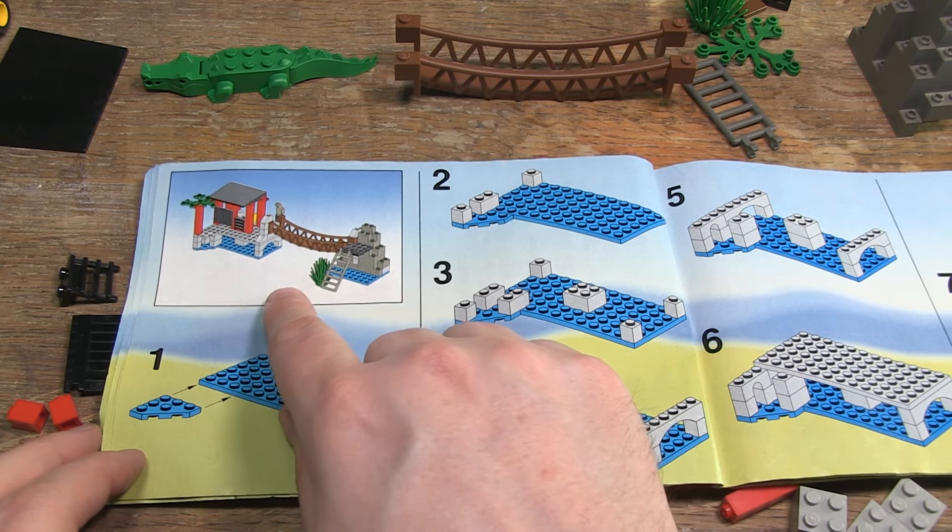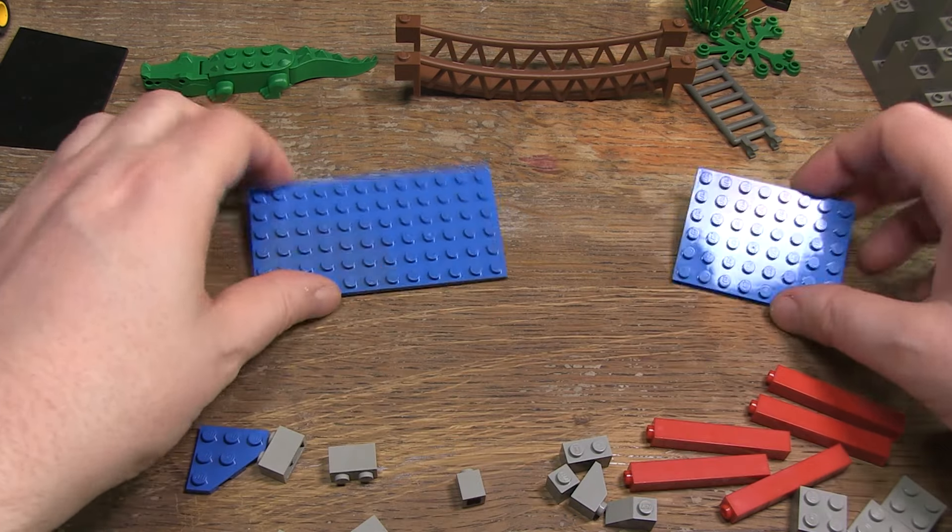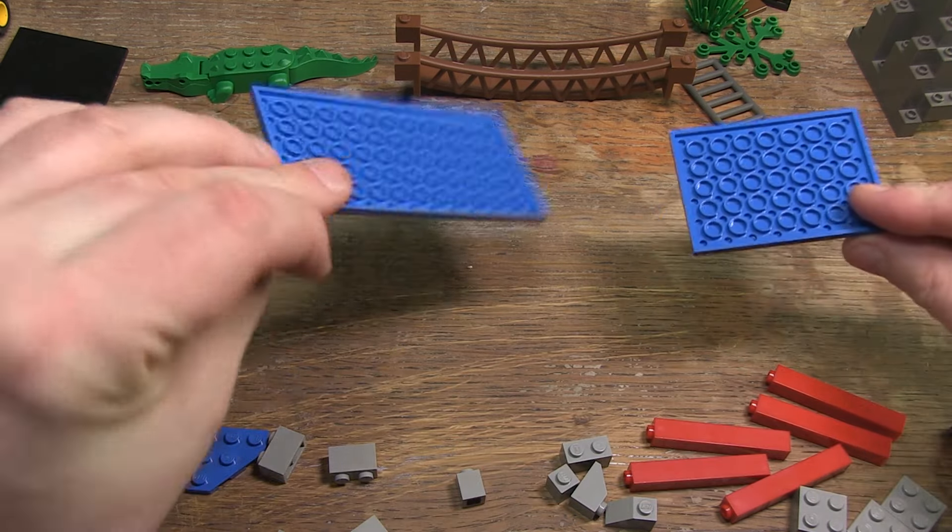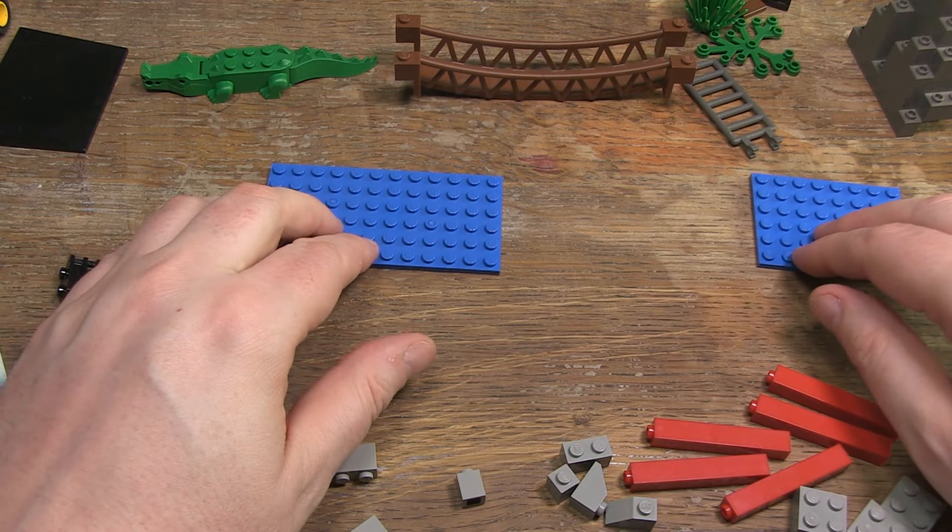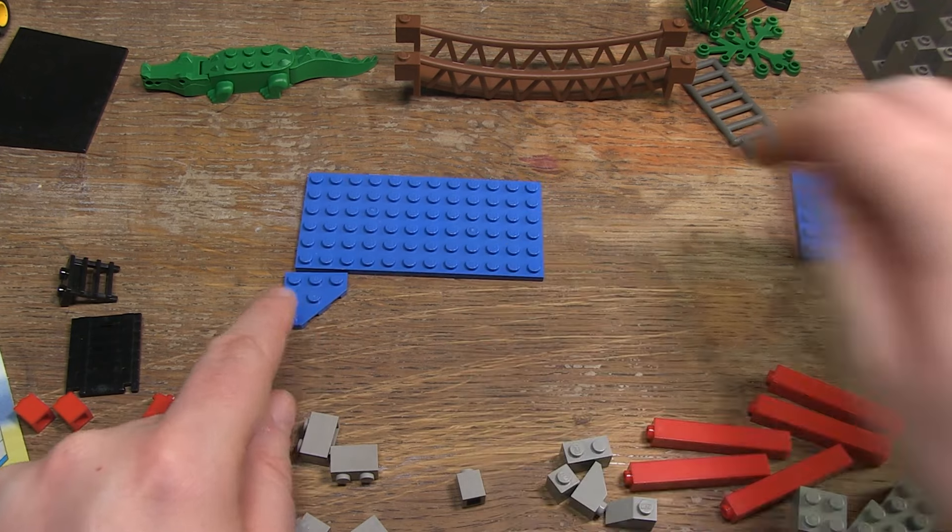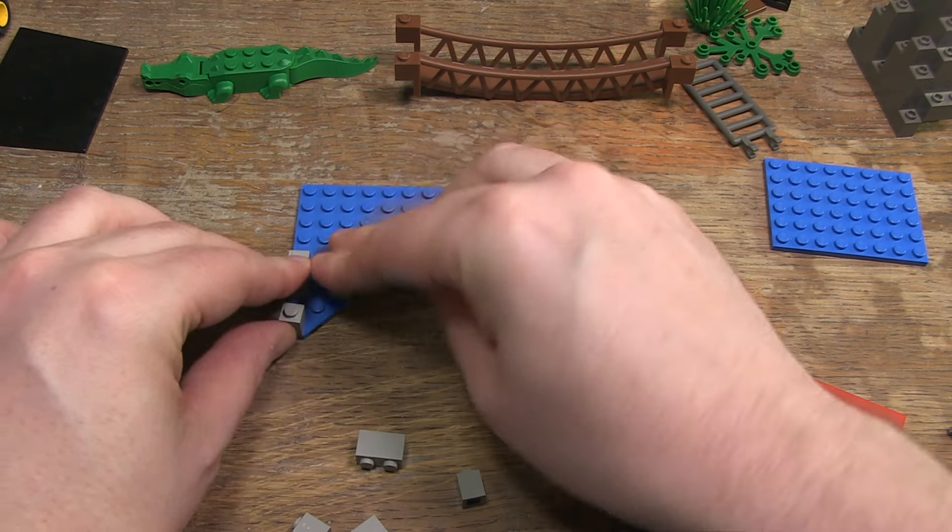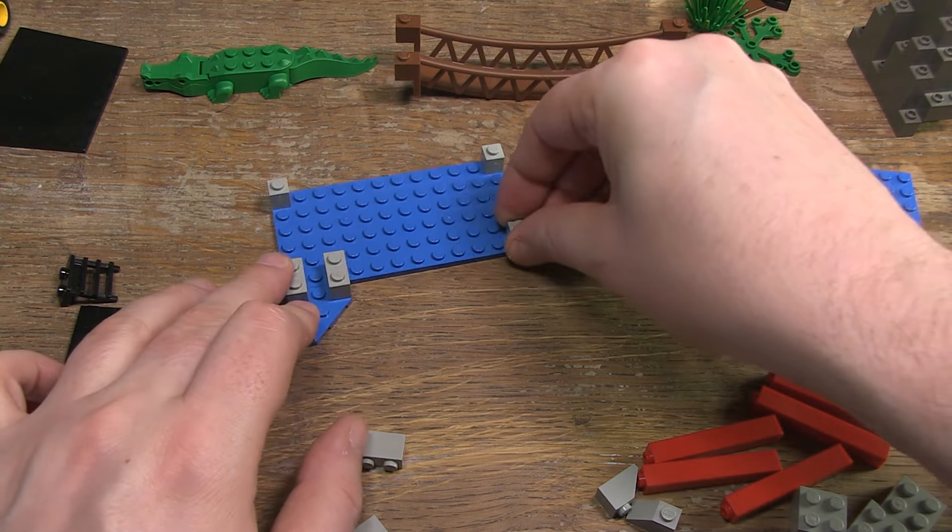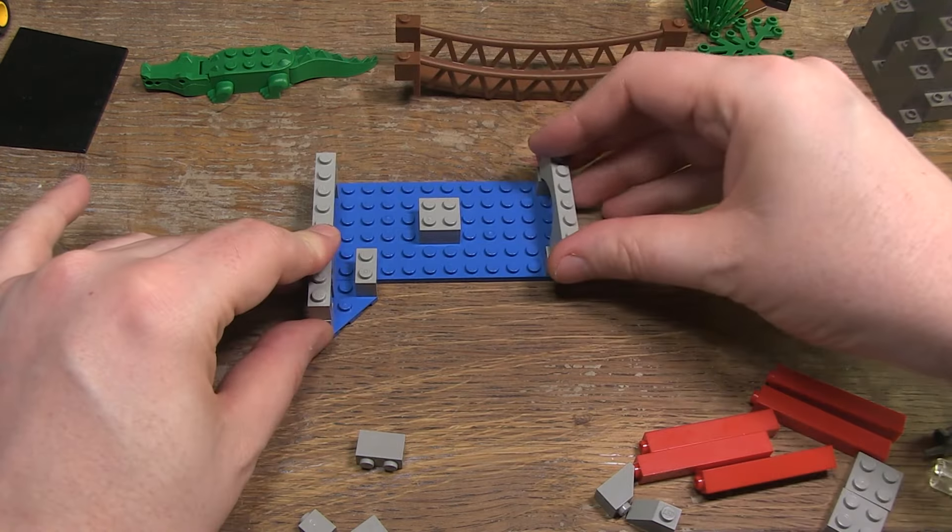And now the hut with suspension bridge and rock formation. Here it's a pity that two small blue panels were chosen as a base. A compact blue base plate that connects both parts would have been an absolute added value here. First, some basic gray bricks. One by one, one by two, and even some curved bricks.